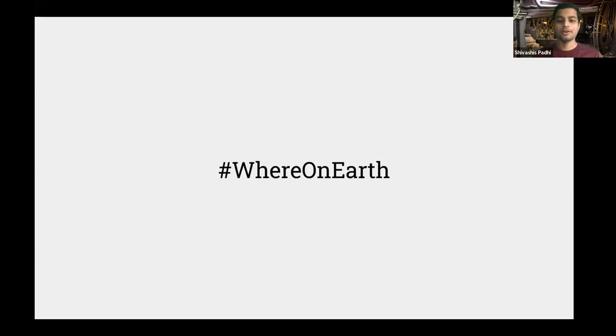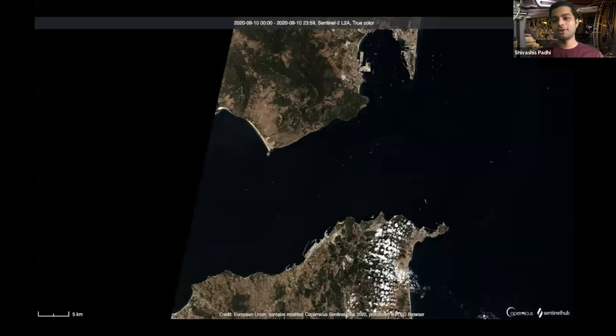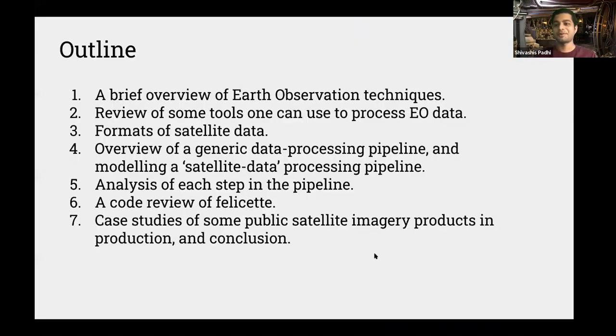So before we start the talk, let's go through a challenge. If you follow ESA's Earth Observation channel on Twitter, they host a challenge every week, and it says where on Earth, and they give you an image of a random place on Earth. You have to guess where it is. So your 10-second timer starts now. I hope you have your answer, but this is the Strait of Gibraltar. The part above is Spain, and the part below is Morocco. That's the fun part. The rest of the part is boring. I hope not, but I'll try to make it interesting.